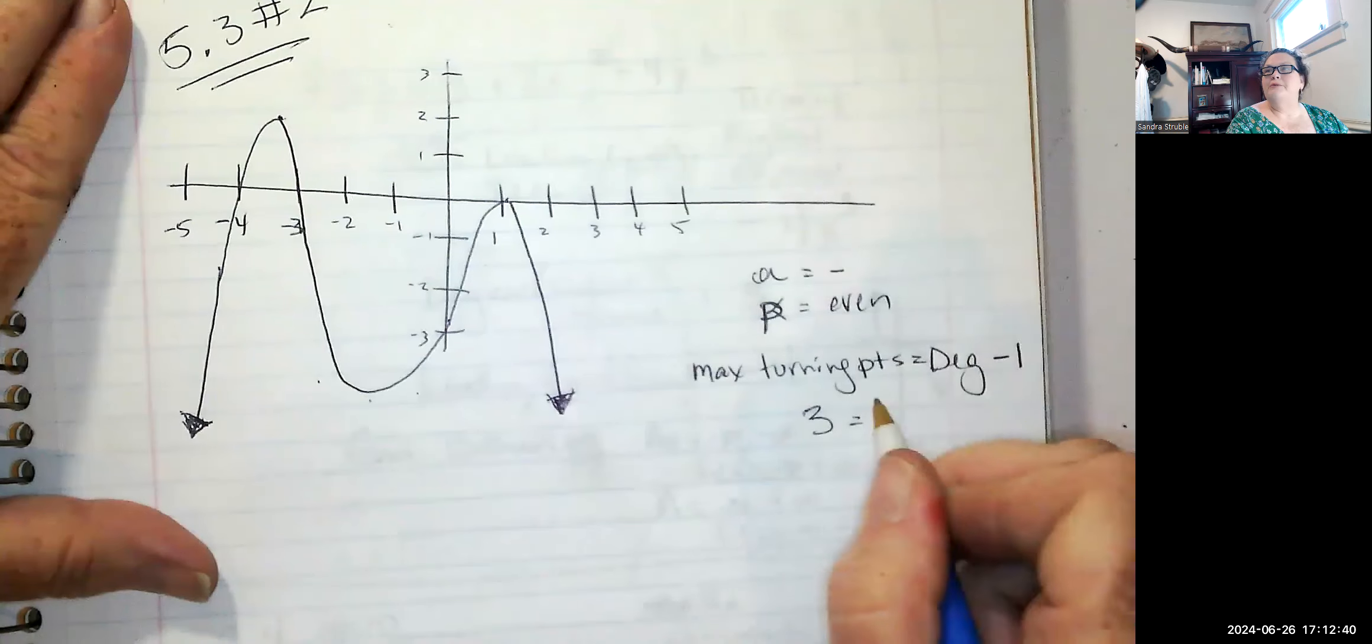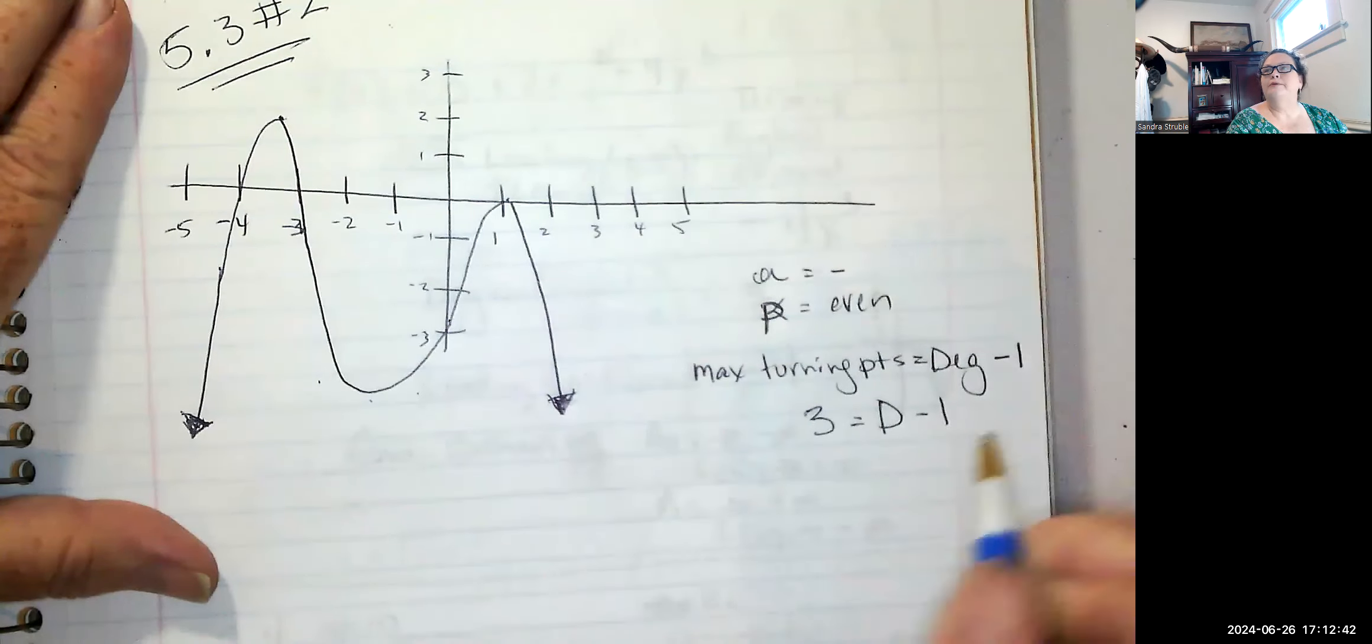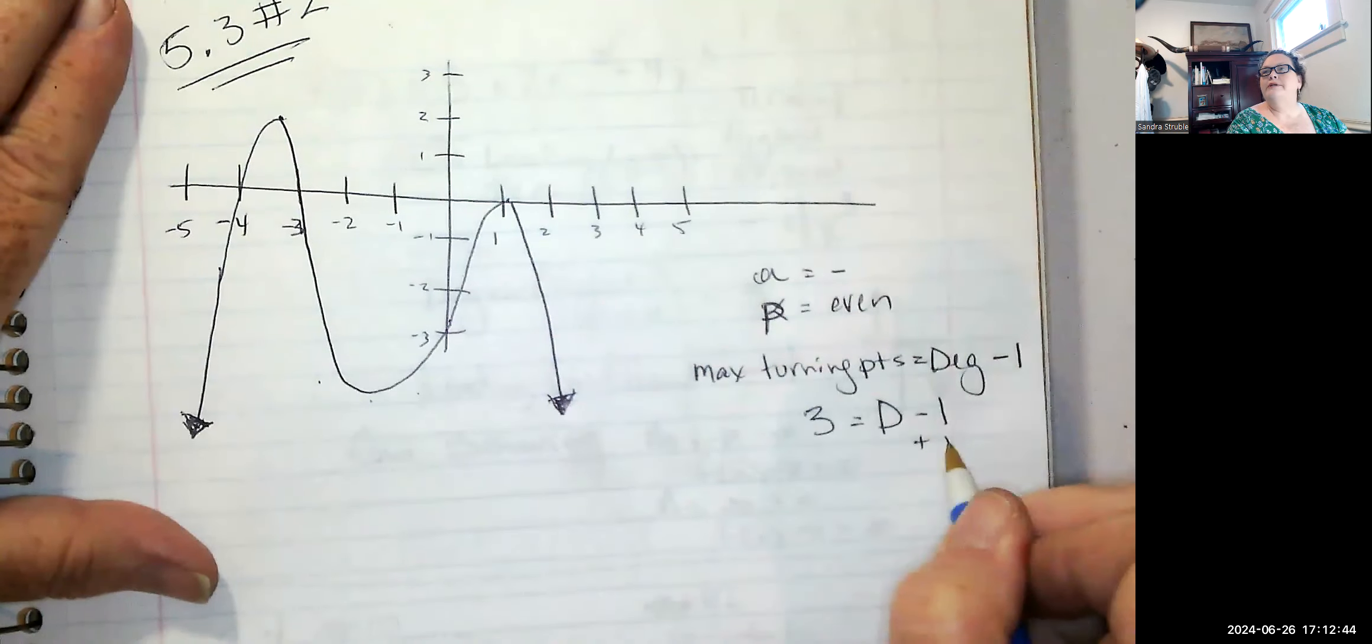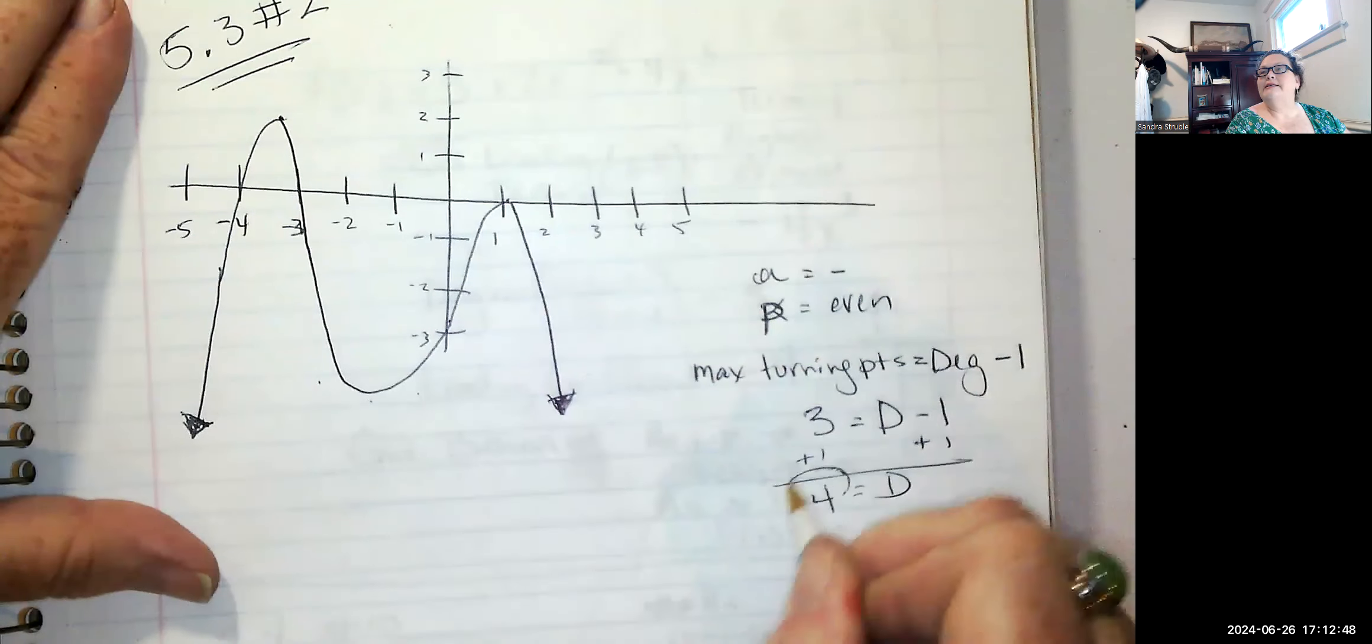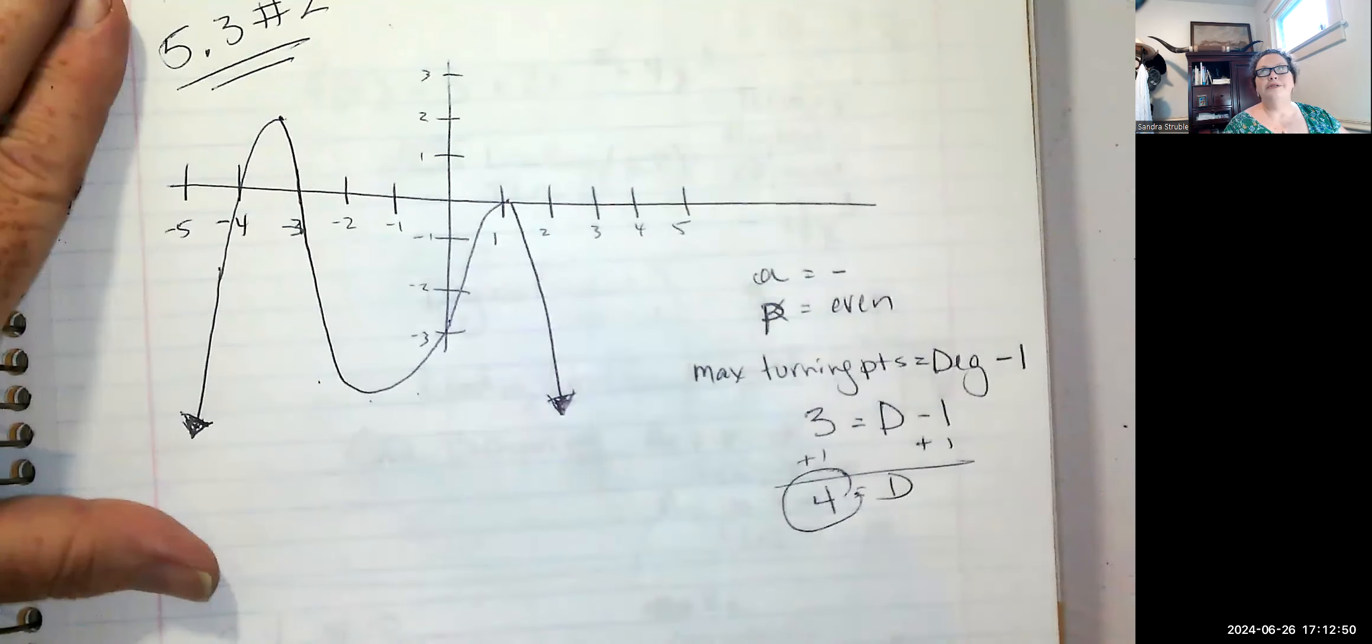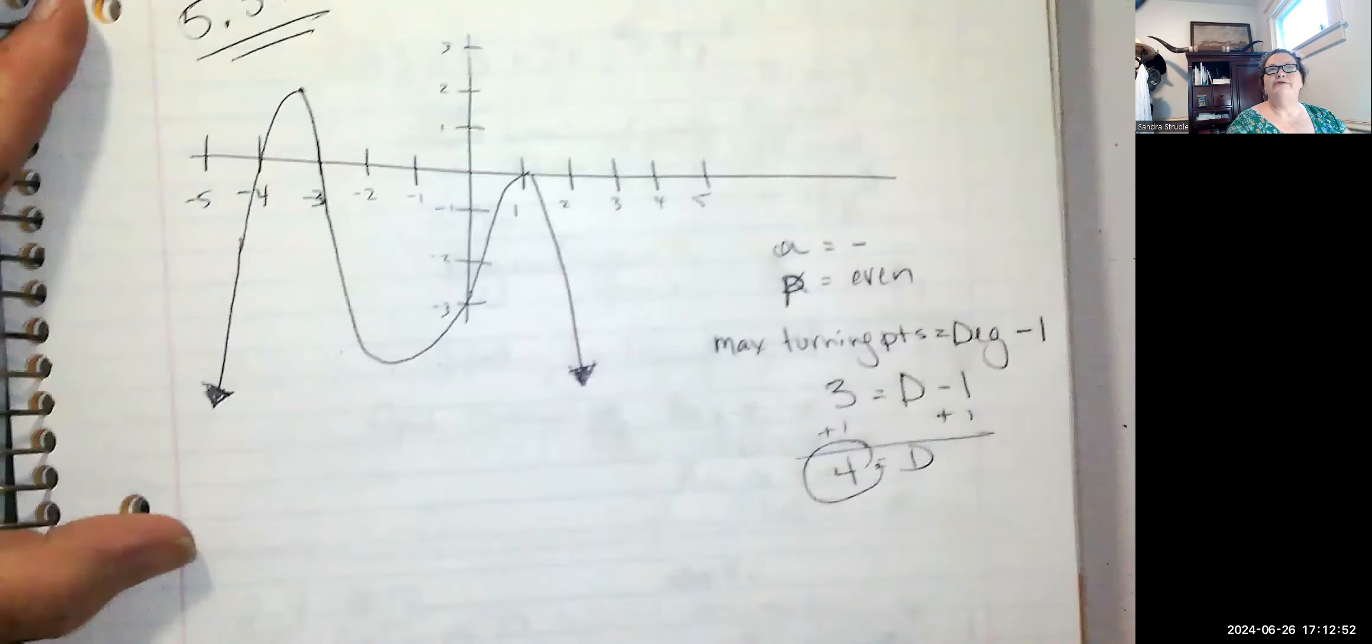So we have three turning points here. I can find my degree. I'm just calling it a big D. So I'm going to add one to both sides. And that means that my degree is at least a four. We already knew it was even. So it's at least a four.